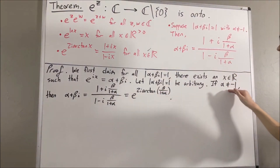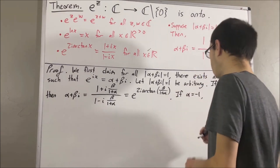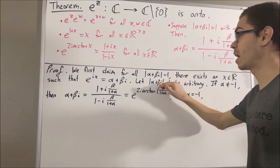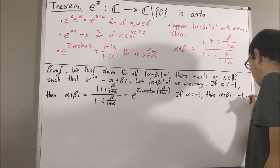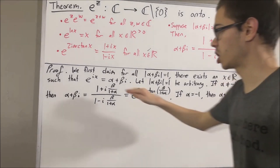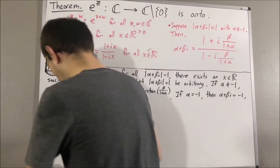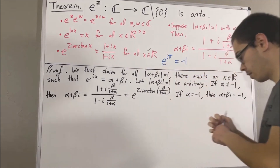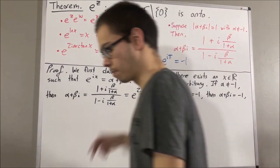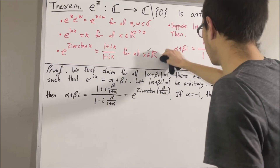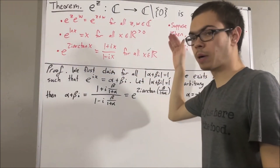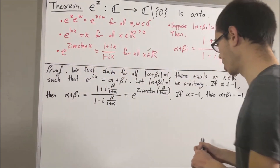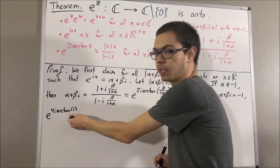This completes the case alpha ≠ -1. Now let's consider the case alpha = -1. If alpha equals -1, then since alpha + beta·i has magnitude 1, alpha + beta·i must equal -1. So we need to find a real number x such that e^{ix} equals -1. You probably know that e^{i·pi} equals -1, but we haven't defined pi yet. Nonetheless, whatever pi is, we know pi/4 equals arctan(1), so pi equals 4·arctan(1). We are going to show that e^{i·4·arctan(1)} equals -1.